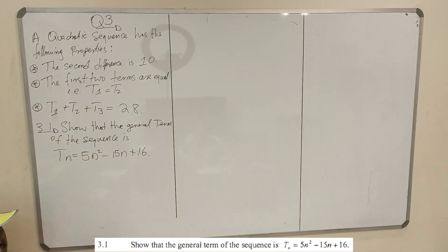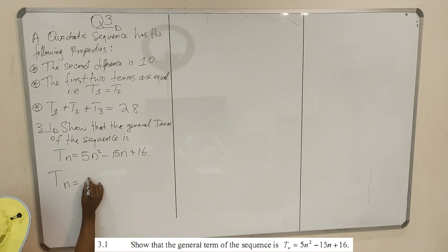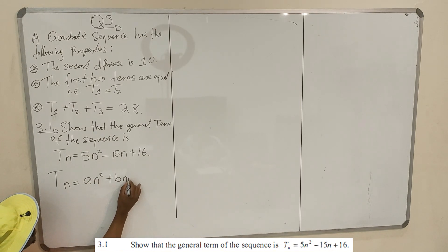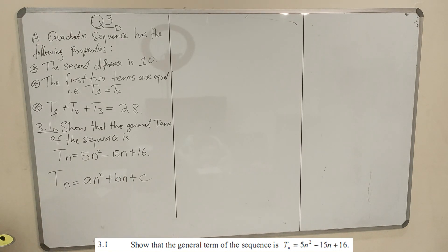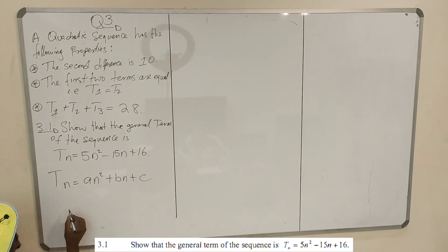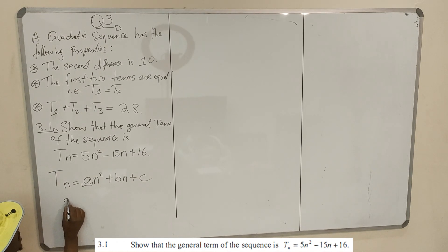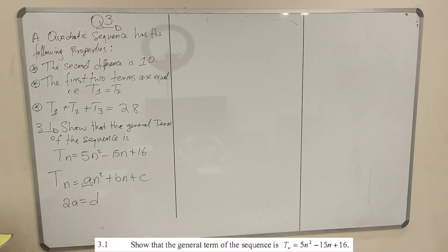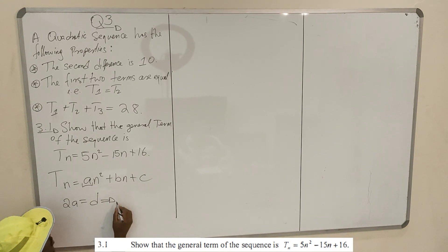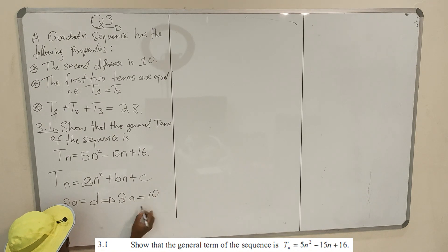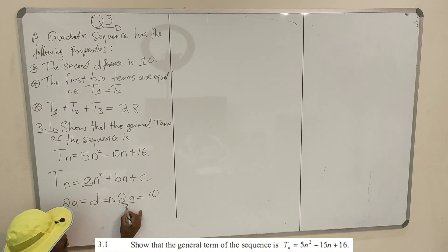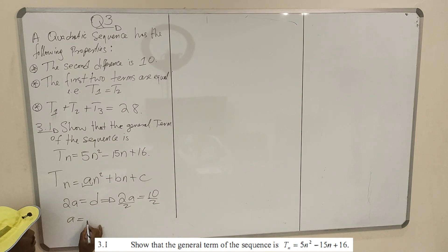The general term of the quadratic sequence — what is it? Tₙ is equal to an² plus bn plus c. Now, the second difference equals 2 times A, which equals 10. Divide by 2 on both sides. A is equal to 5.